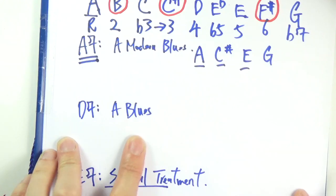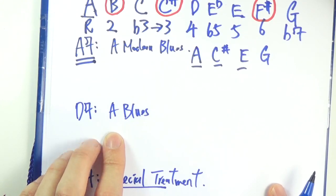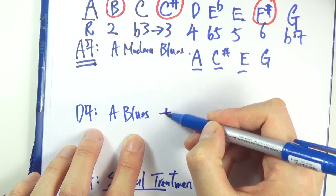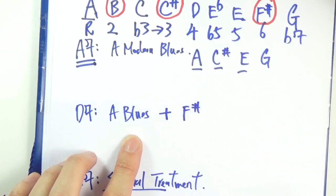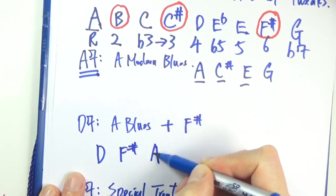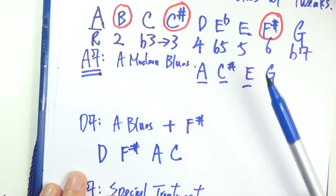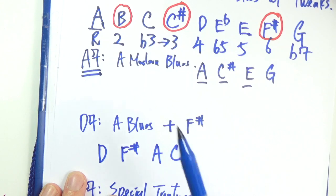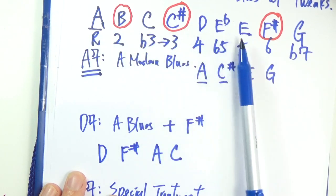On the D7 chord, we will mostly stick to A blues plus the F sharp. If you look at the chord tones, simply the A blues scale would suffice. A, C, D, Eb, E, G.